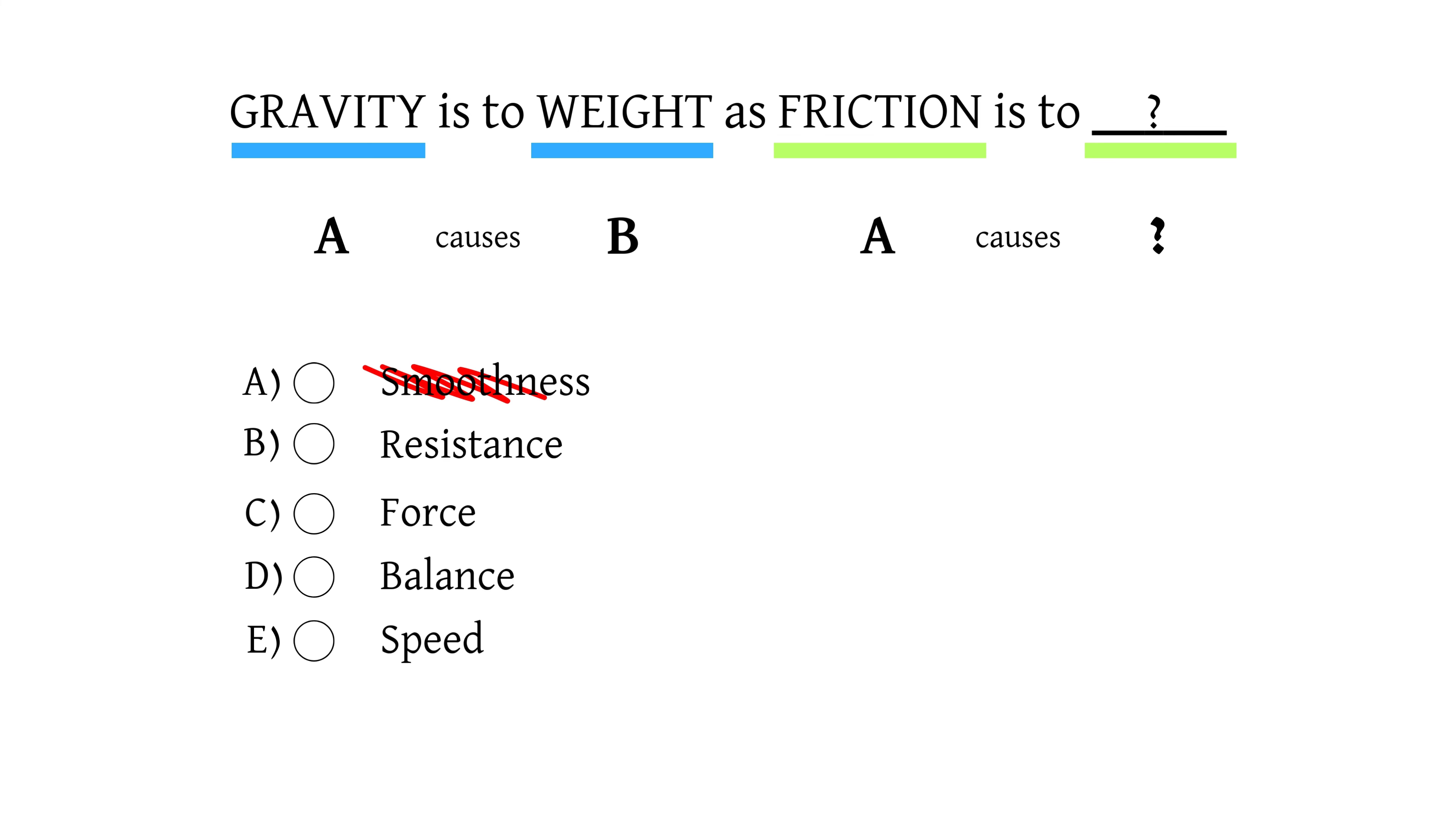So we'll leave it blank for now. Option C is force and whilst friction is a force, it doesn't specify the result or effect like resistance does. So we're going to eliminate option C.